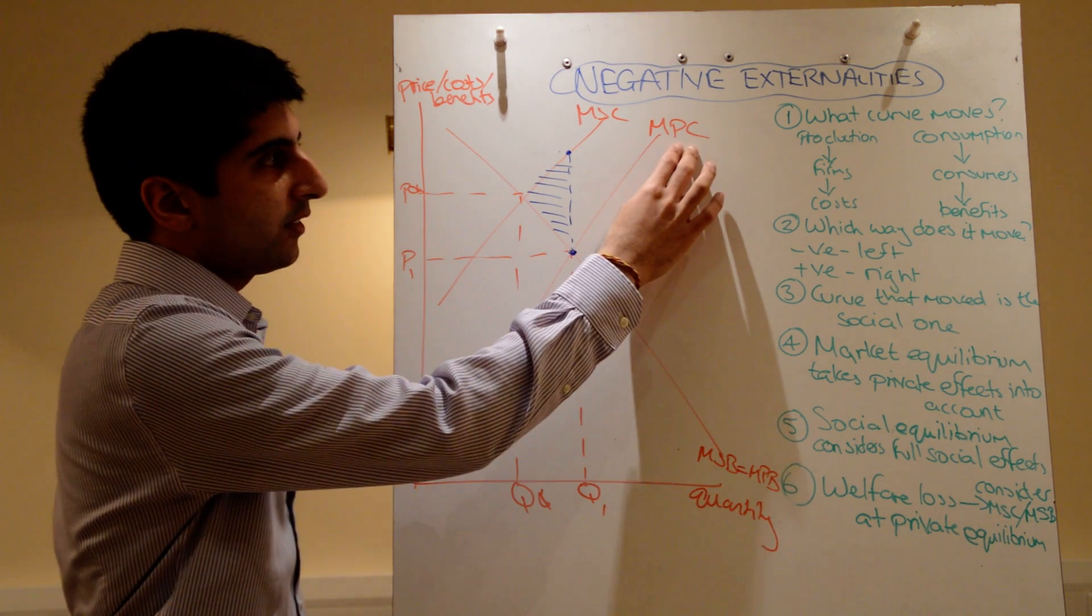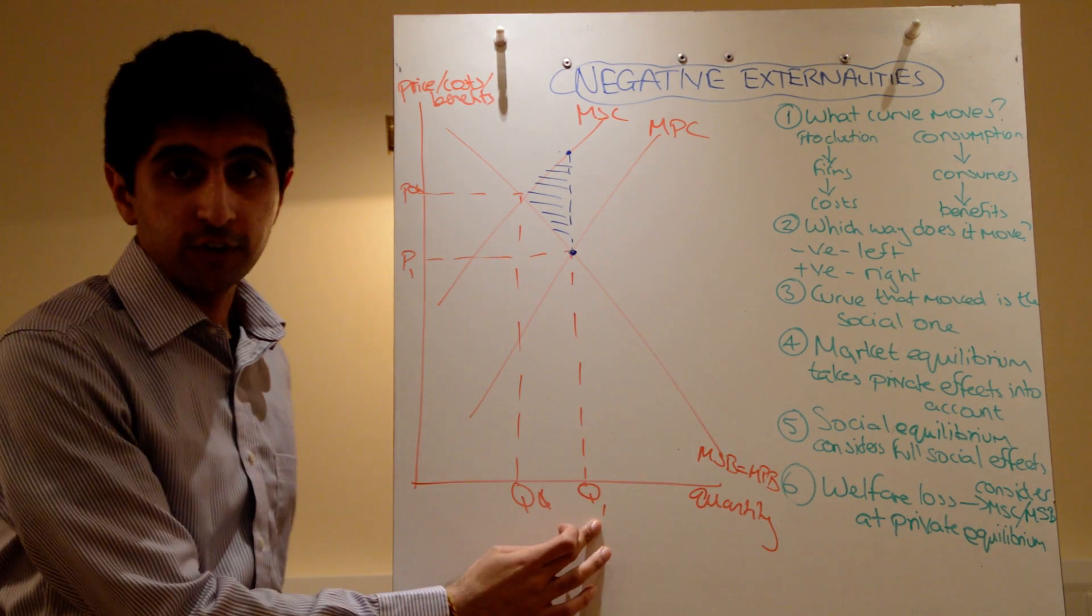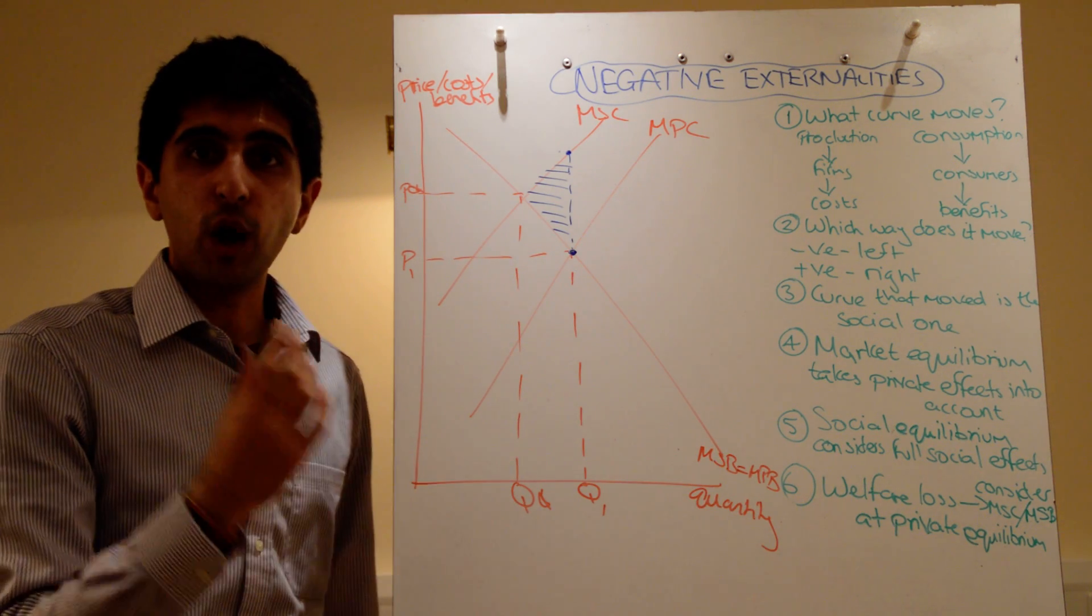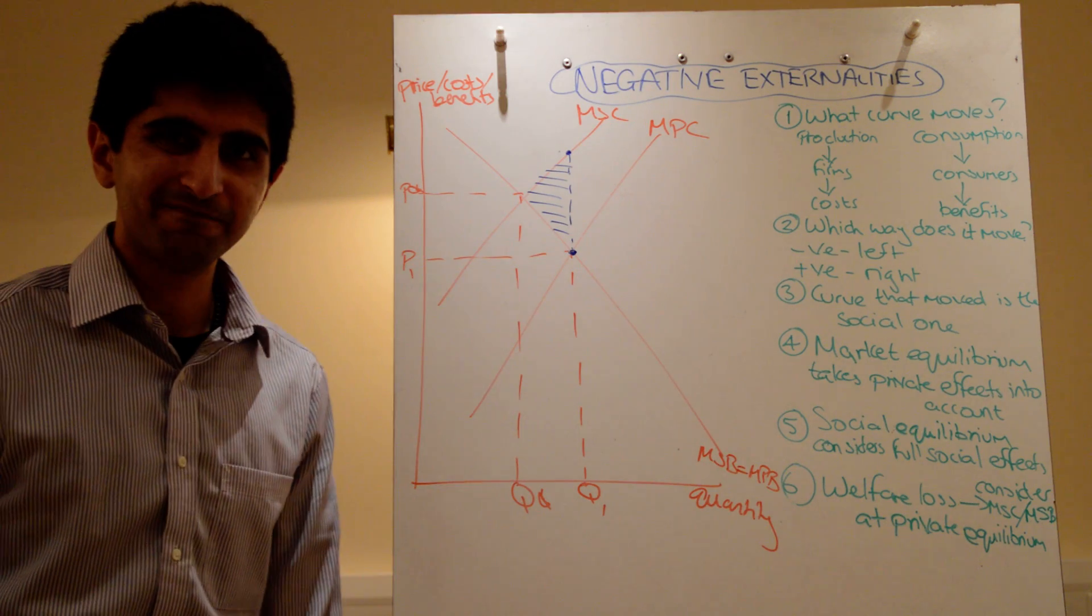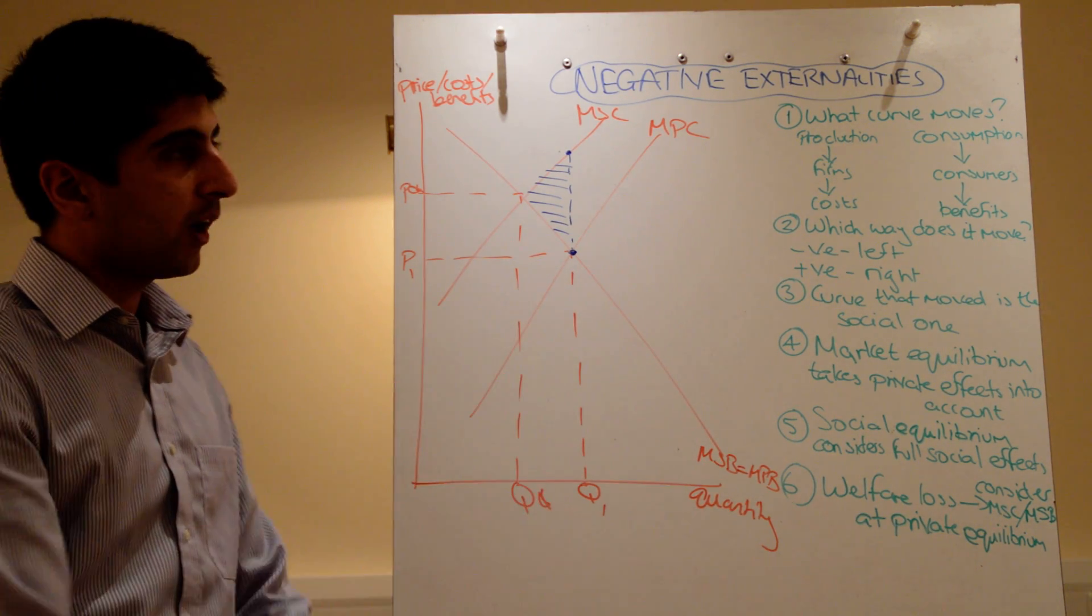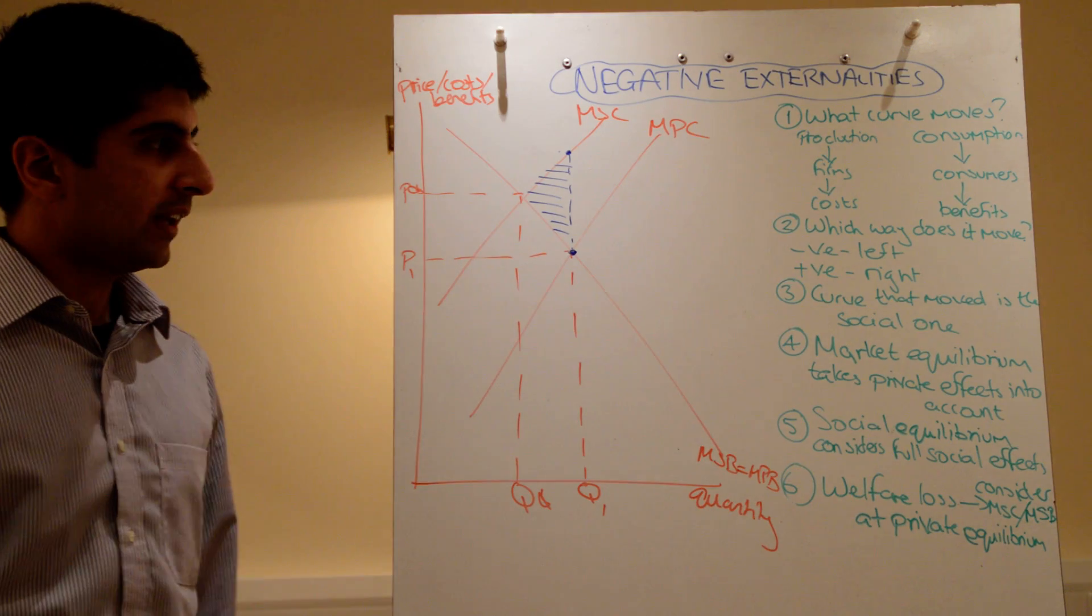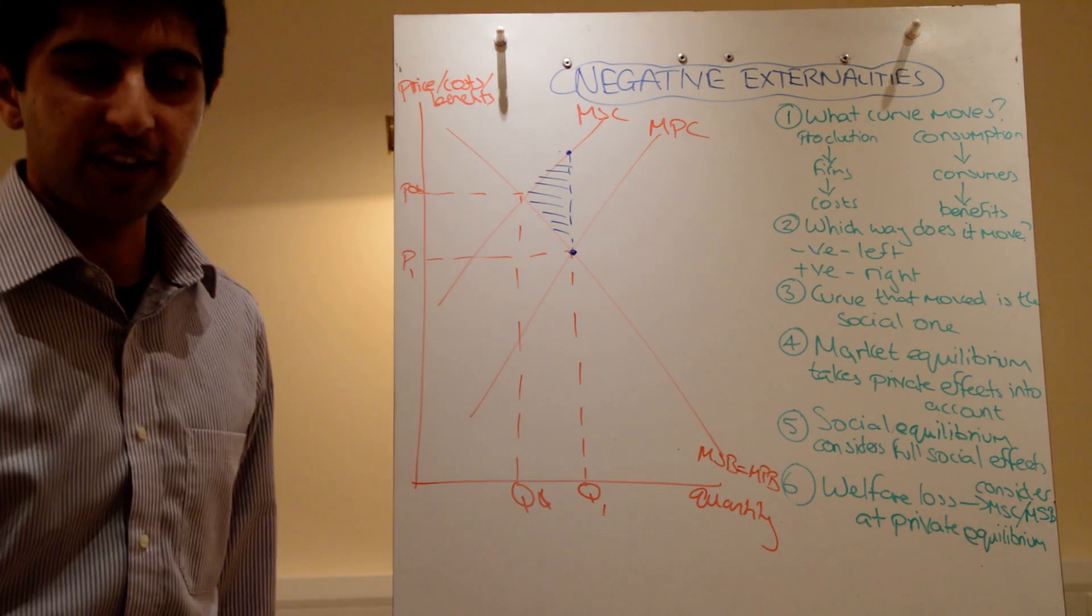But because of self interest, the market allocates resources with Q1 instead of Q star. And we have an overproduction issue. A misallocation of resources which causes market failure. So that's the rationale behind negative externalities in both production and consumption. Next time, positive externalities. Thank you very much. See you then.